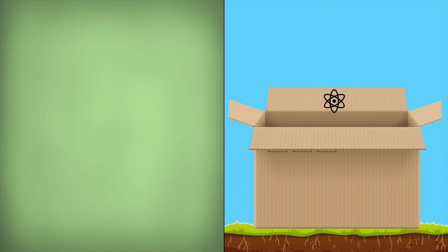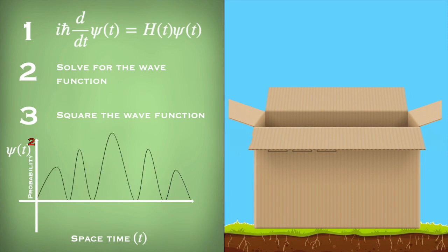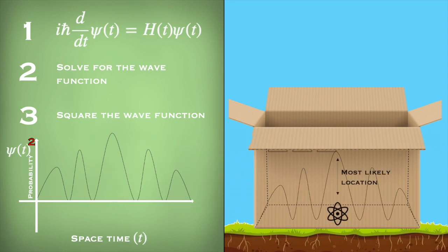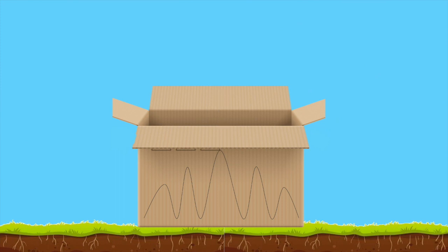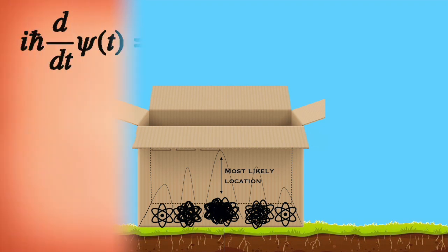Now let's try a similar example, except this time it's just with an atom inside a box. When we solve for the wave function of a particle and then square it, it actually tells us the probability — the chance of the particle existing in points of space-time. Because of this, we can see the places inside the box where the particle has the highest chances of being when we open the box. And just like your friend, if we keep repeating this experiment, we will see that most of the time the particle will appear at the highest peaks, in the most likely locations.